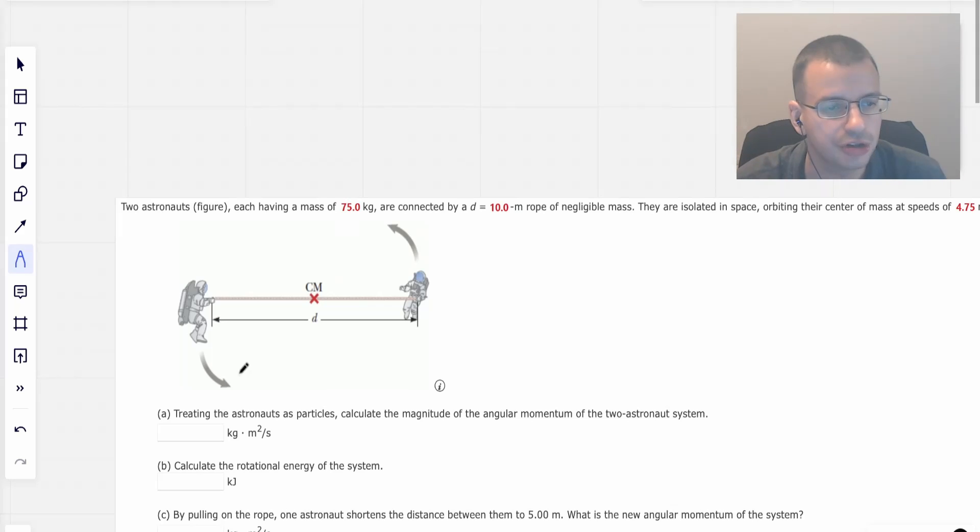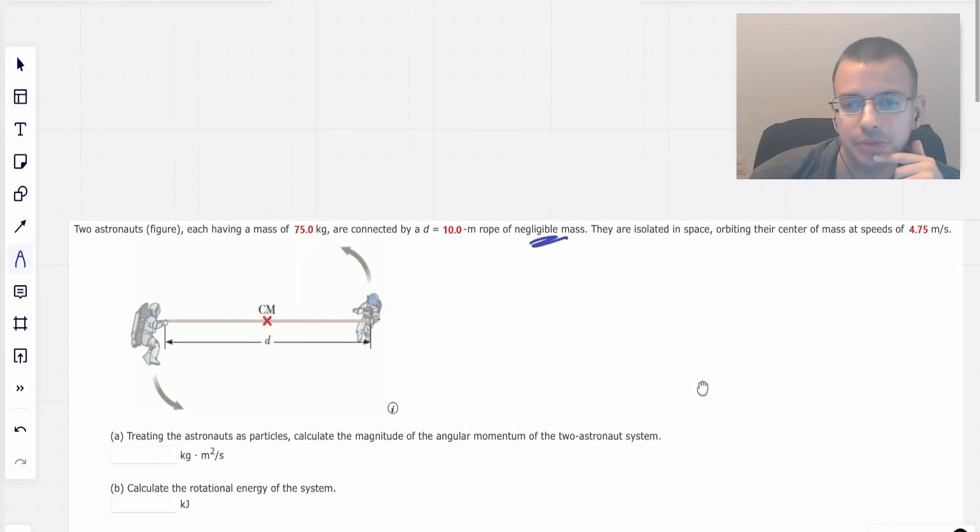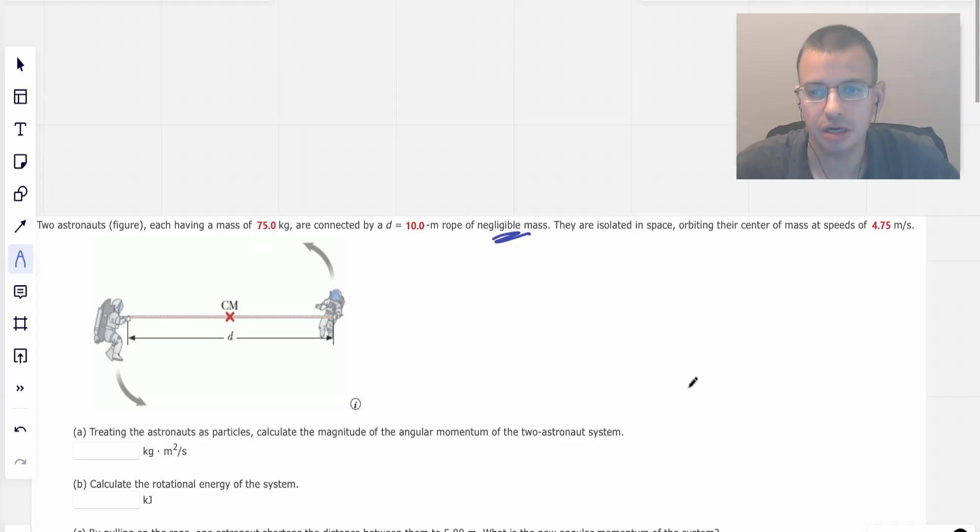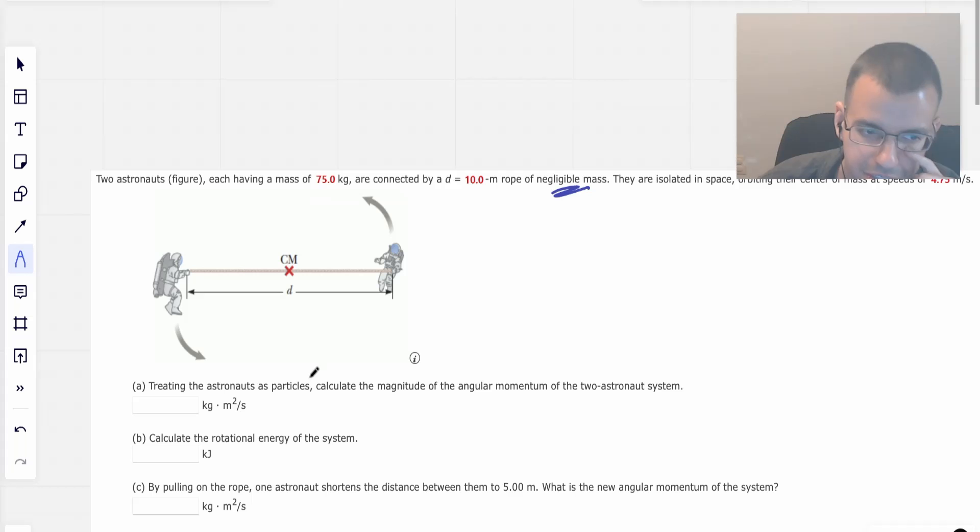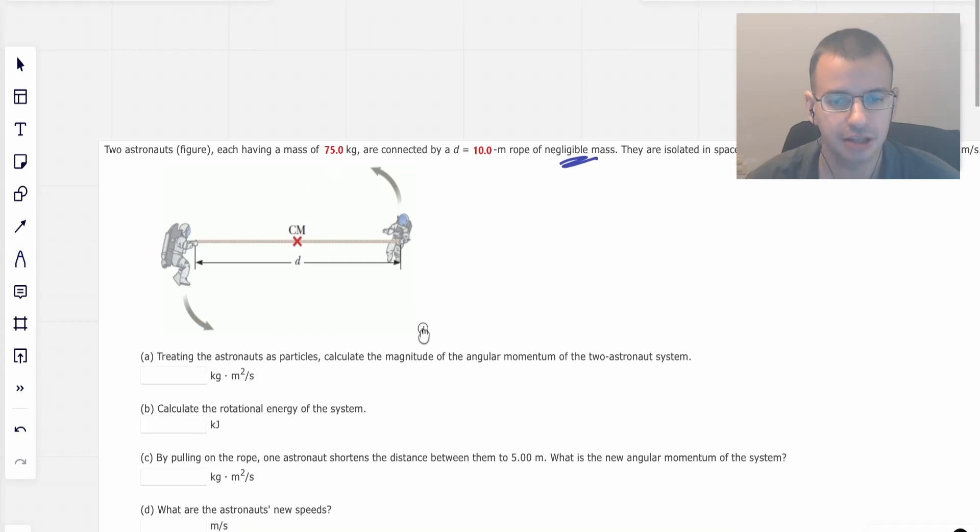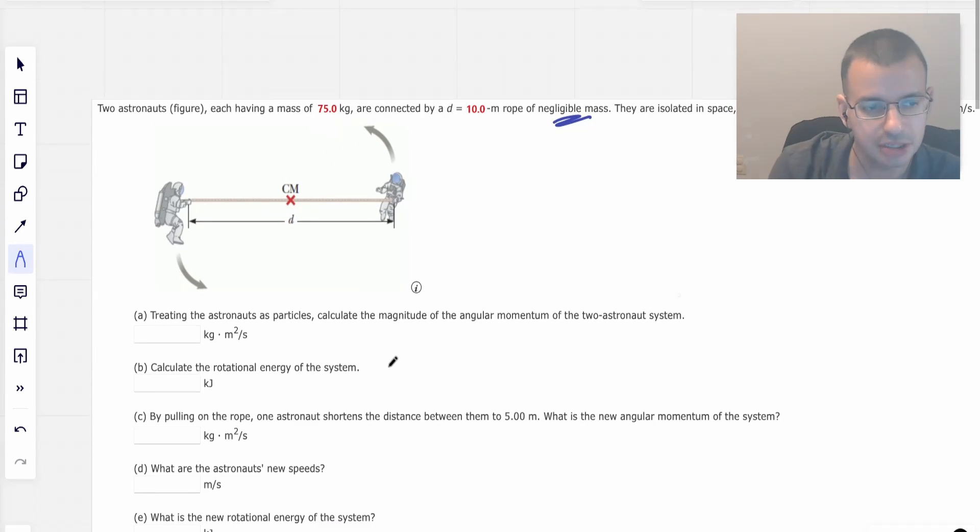Two astronauts, as shown in the figure below, each having a mass of 75 kilograms, are connected by a 10-meter rope of negligible mass. It means we don't have to worry about moment of inertia of the mass. They're isolated in space, orbiting their center of mass at a speed of 4.75 meters per second. Treating the astronauts as particles, calculate the magnitude of the angular momentum of the astronauts in the system.